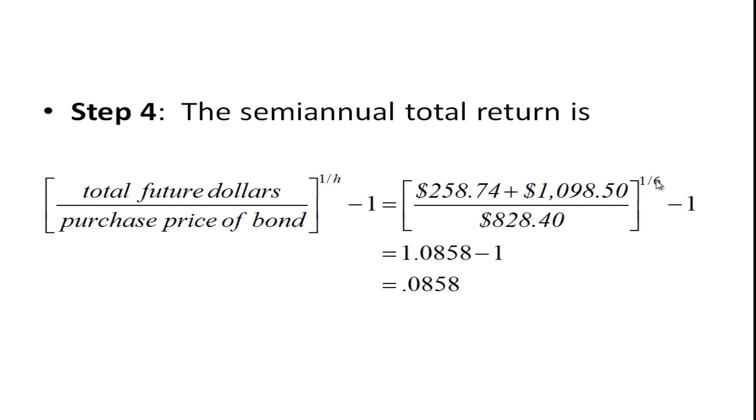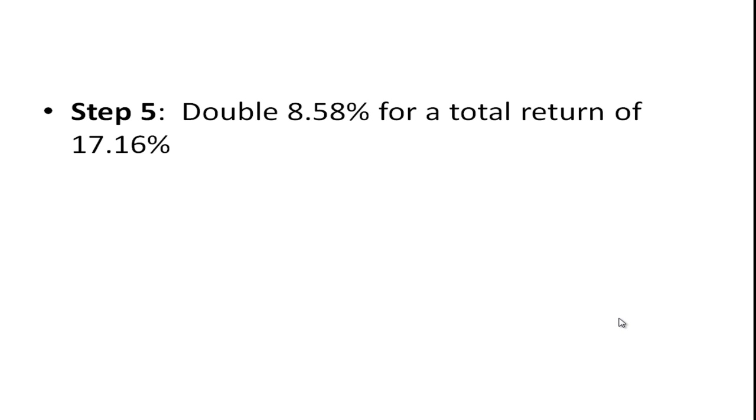raised to the one-sixth power. There are six three-month periods minus one. If we work that out, we get 0.0858 or 8.58% for a six-month period, and then the final step is just to double that, and we get a total return of 17.16%.